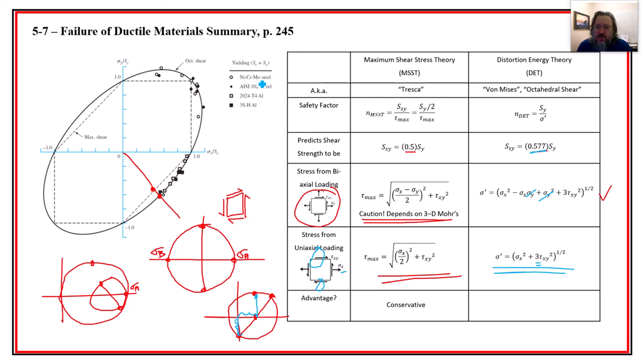So the advantage of the maximum shear stress theory is it's conservative. So you're being actually a little bit extra cautious in your prediction. We will always have a safety factor that is lower when we're evaluating something with the maximum shear stress theory. But we also have the benefit in distortion energy theory of being more accurate, generally speaking. If I'm with a nice homogeneous, ductile material, it's pretty darn good, distortion energy theory. So it's got a bit of an accurate.